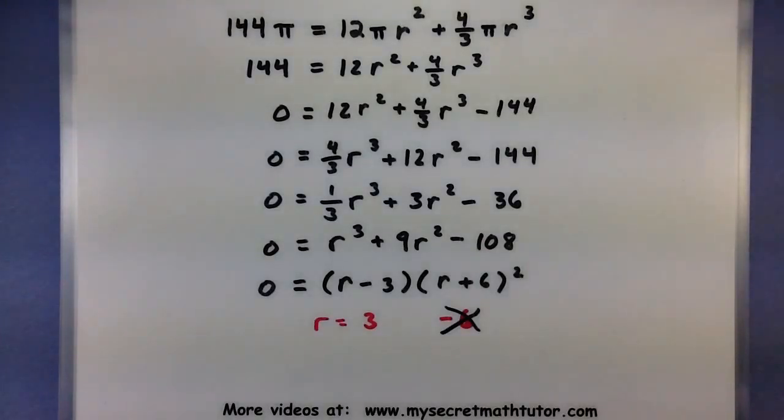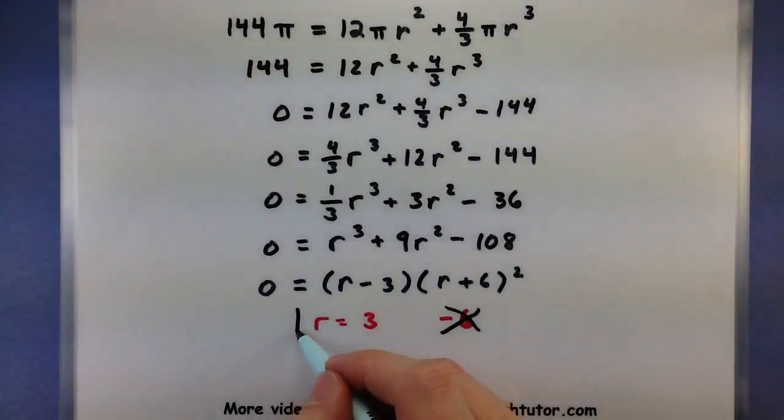However, having a radius of 3 looks like it will work out just fine. So we will keep this as our solution.